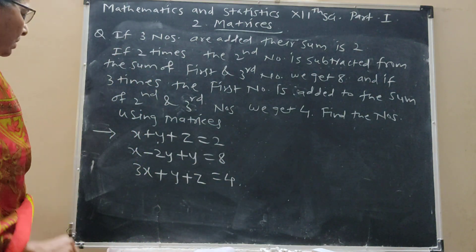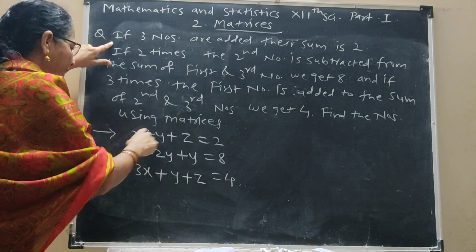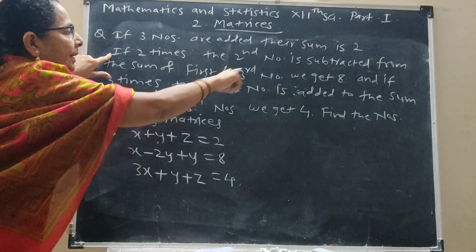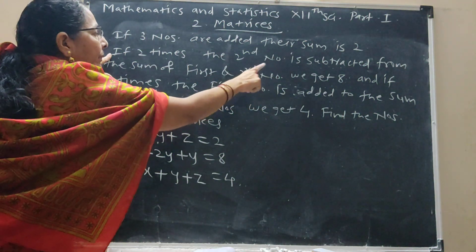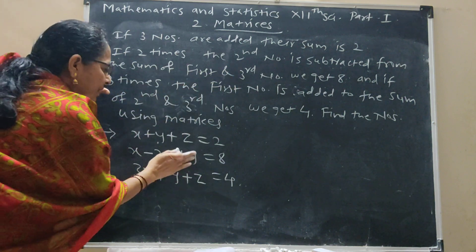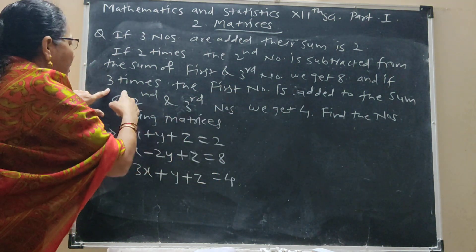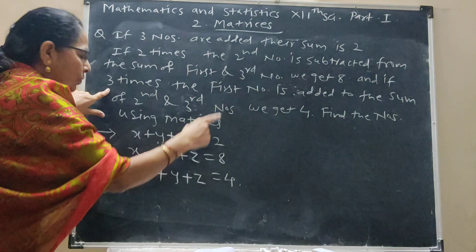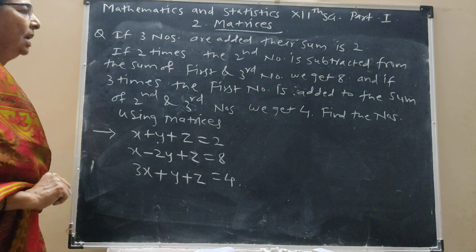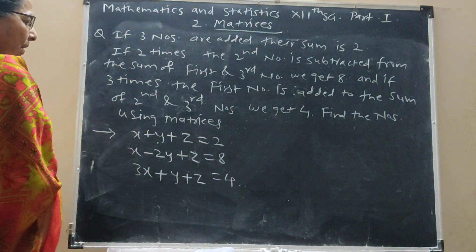Now these equations — see. Three numbers added: x plus y plus z, we get 2. Two times the second number, 2y, subtracted from the sum of the first and third, x and z, we get 8. Three times the first number, 3x, added to the sum of the second and third, y plus z, we get 4. These are the equations, and by using these equations and back substitution, we have to find the numbers.